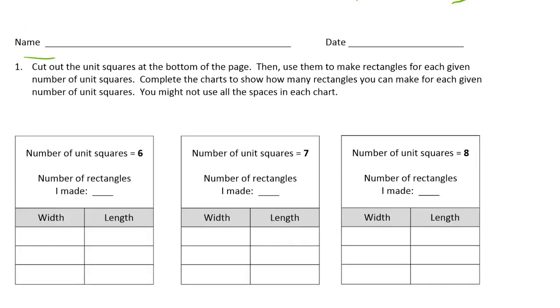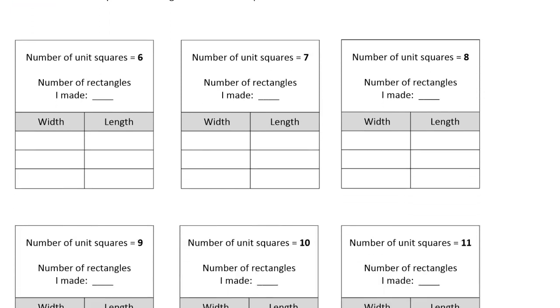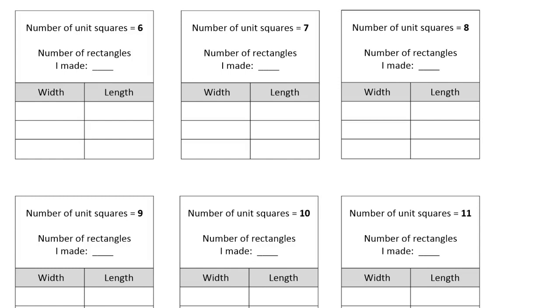And you're going to make arrays for rectangles. So for example, for this first one here it says number of unit squares. So think about what can you do if you've got six of those squares? How many different rectangles can you make? And I'm going to draw them over here. So with only six squares you can make one that's three rows of two. So it's two wide and three long.